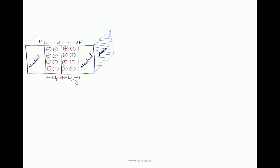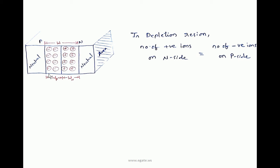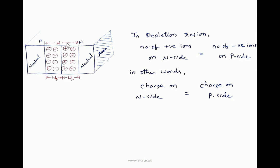In the depletion region, the number of positive ions on the N-side is exactly equal to the number of negative ions on the p-side. In other words, we can write: charge on N-side equals charge on p-side. The total charge on each side is confined to the depletion region only, since the extrinsic semiconductor outside is electrically neutral.